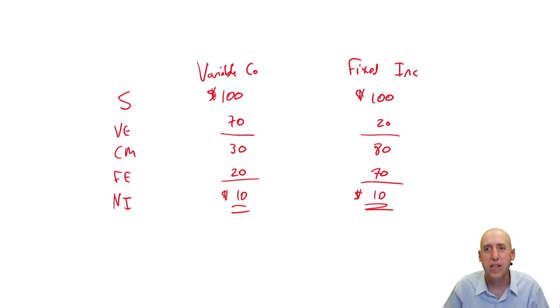We've got these two competitors. They're in the same industry and they're competing for customers and hoping to do well. We have Variable Co and Fixed Inc. And you can see they both have the same sales. They're the same size competitors. They both have a hundred million dollars in sales. Let's pretend these are all in millions. Seventy million dollars in variable expenses for Variable Co and $30 million contribution margin, 20 in fixed expenses to bring them to net income of 10. Fixed Inc., exact opposite story. They have very low variable costs, very high fixed costs and same net income. So same sales, same net income.